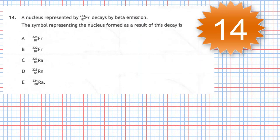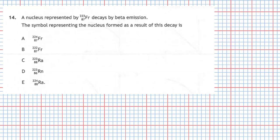Question 14 from section 1 of the 2019 Higher Physics Examination. A nucleus represented by 223 francium 87 decays by beta emission. The symbol representing a nucleus formed as a result of this decay is one of five choices. Here's a quick recap on the symbols used in nuclear equations.